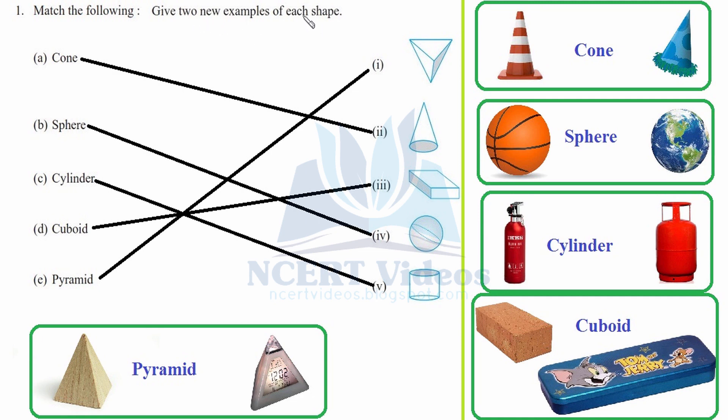Now give two new examples of each. Here you can see a cone - this is a traffic cone and this is a birthday cone. Sphere: a basketball and the mother earth. Cylinder: this is your LPG cylinder and this is your fire extinguisher.